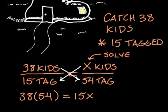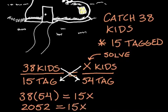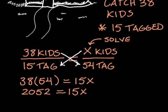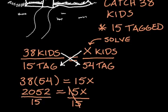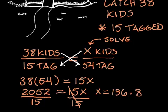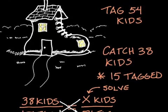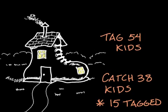This becomes a nice linear equation that's much easier to solve. Multiplying, we get 2052 equal to 15x. To solve this, all we need to do is divide both sides by 15. The 15's cancel out, giving us x equal to 136.8. Since we are talking about children, we round to the closest whole number, which tells us that this poor beleaguered old woman has 137 children total.